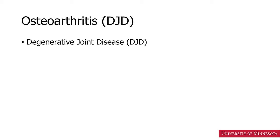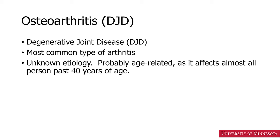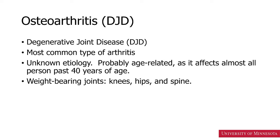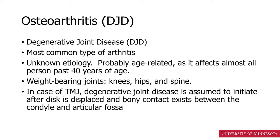Osteoarthritis is also known as degenerative joint disease or DJD. This is the most common type of arthritis of all the joints. In other joints, osteoarthritis is considered age-related — everyone past the age of 40 years has some features of osteoarthritis. Frequently, the weight-bearing joints will show signs of osteoarthritis. In the temporomandibular joints, osteoarthritis may not be age-related. We suspect that degenerative joint disease of the temporomandibular joints starts after the interarticular disc is displaced and there is contact between the condylar head and the glenoid fossa or articular eminence.